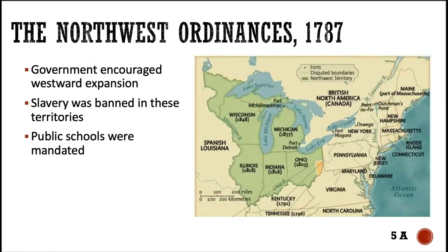The Articles did do some good things. For example, the Northwest Ordinance of 1787. During this time, these states were in the process of expanding their territory. This group of states we now recognize was officially annexed to become part of the United States during this time. The government encouraged westward expansion, slavery was banned in these territories, and public schools were mandated. That's kind of how you got here — that's a big deal.